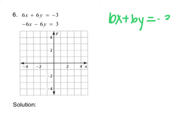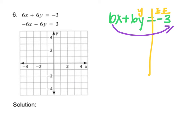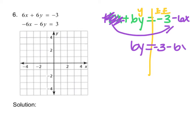I'm going to rewrite the first one: 6x plus 6y equals negative 3. I'll draw my line and label my sides — I want y on one side and everything else on the other. So this 6x needs to move. When we move this 6x to the other side, since it's positive on the left, it's going to be negative on the right. So now I have 6y equals negative 3 minus 6x.